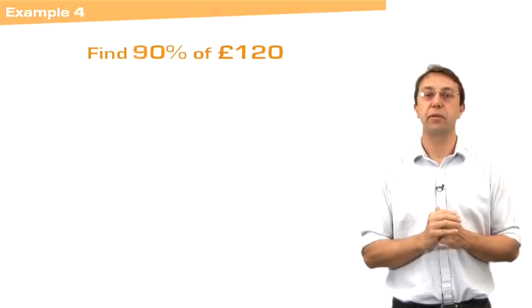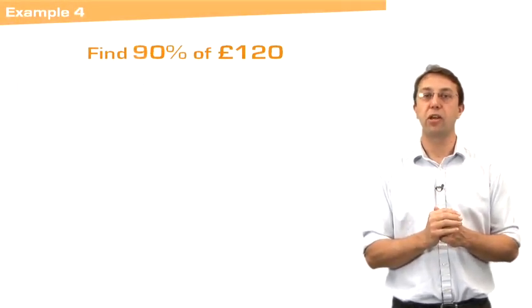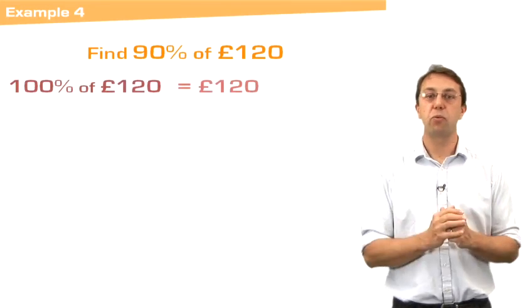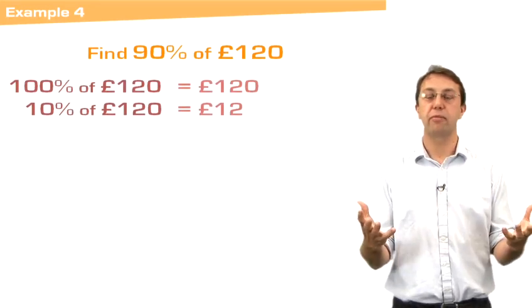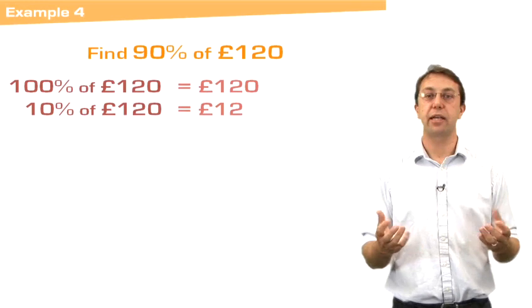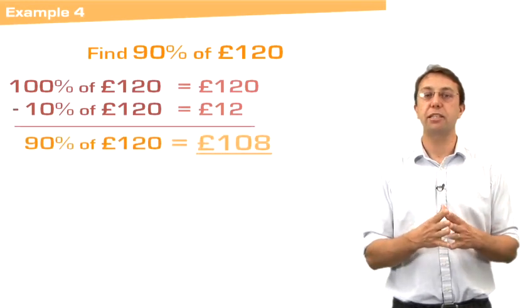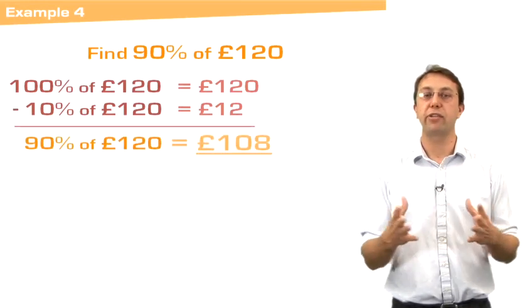Our final example looks a bit tricky, 90%. We're going to do this one a bit backwards. We start off with 100%. Then we find 10% and take it away. So you can see 90% of 120 is 108 pounds. Now that's how you find a percentage.